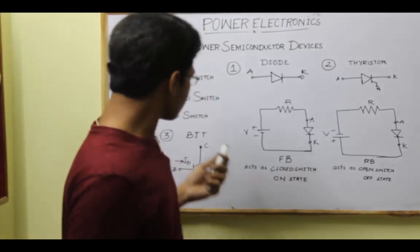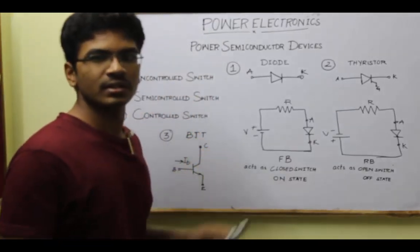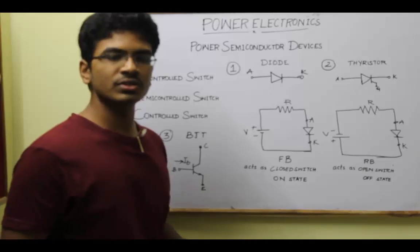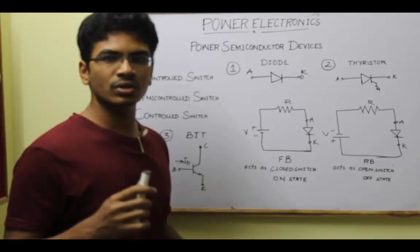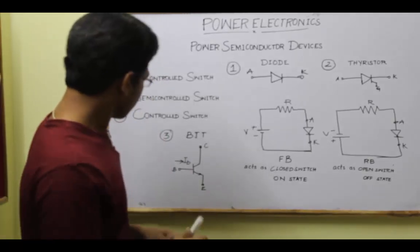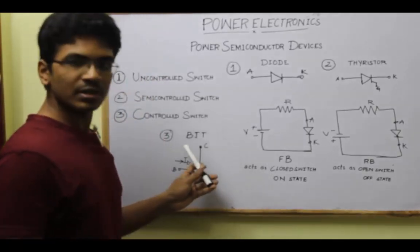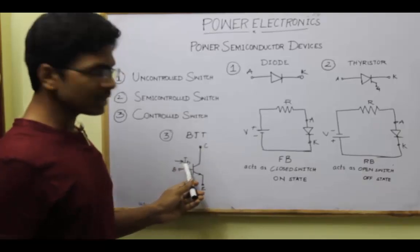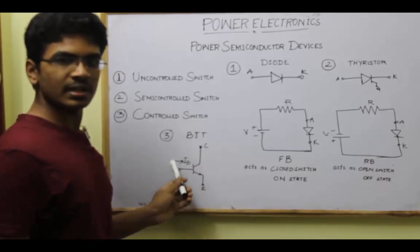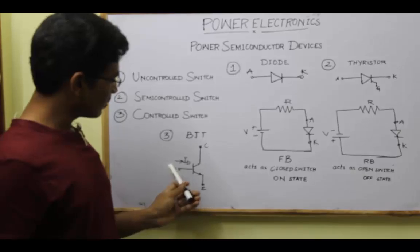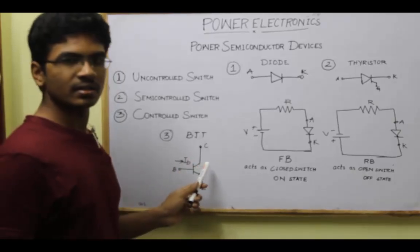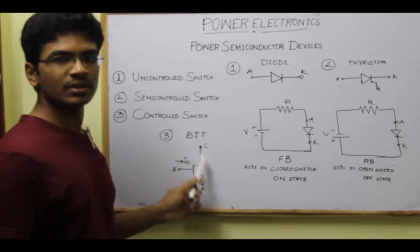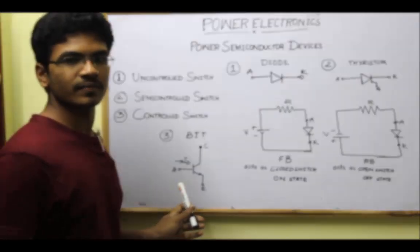Coming to the last one, controlled switch. It can either turn ON or turn OFF using the control terminal. For example, take a BJT. By giving a base current I-B, we can turn ON the device. By making the base current zero, we can turn it OFF.